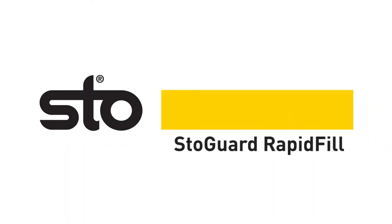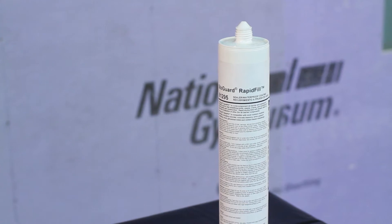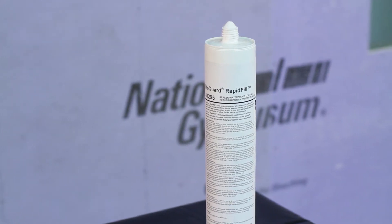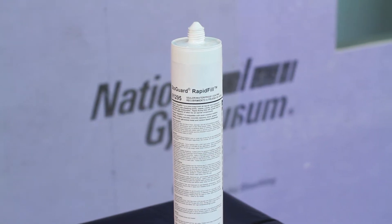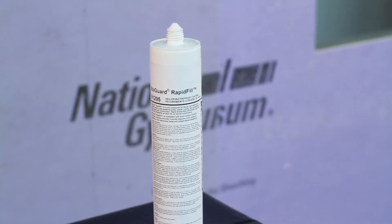Introducing Stogard Rapid Fill. Stogard Rapid Fill is a one-component air barrier and waterproof material used to seal sheathing joints, seams, cracks, and transitions in above-grade wall construction.